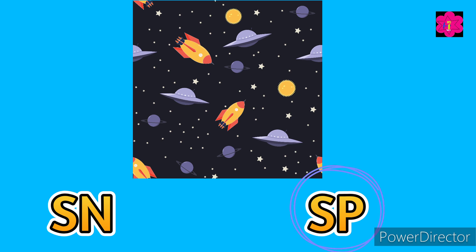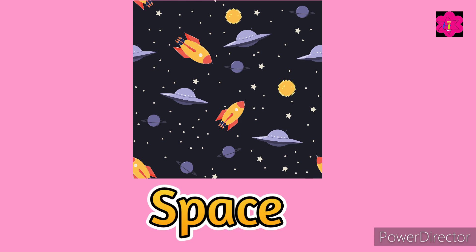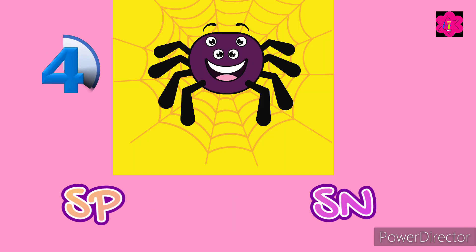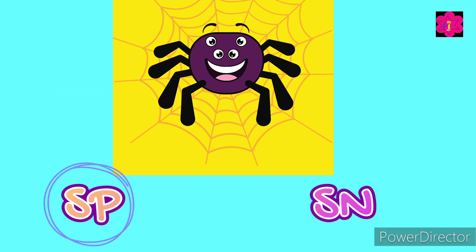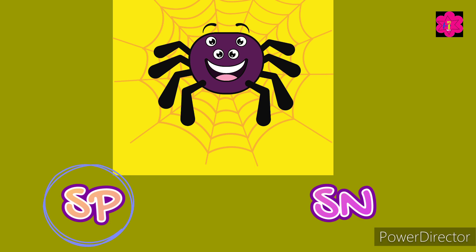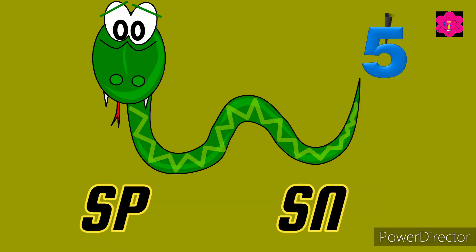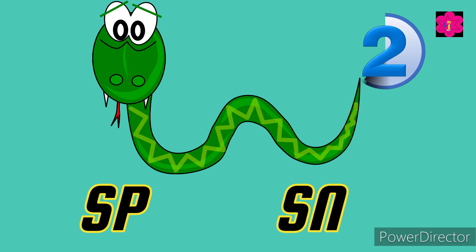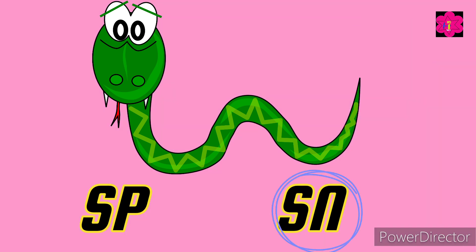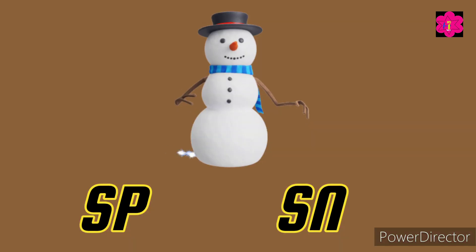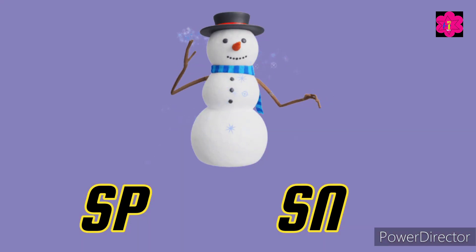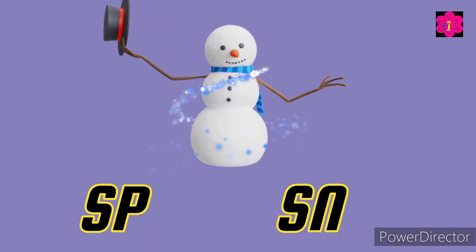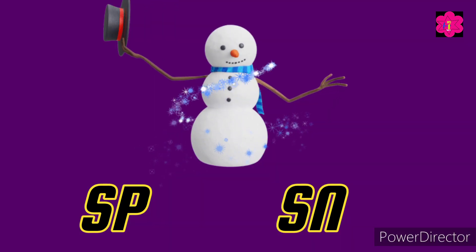SP — space. Correct! Spider. Snake. Yes, this is a snowman — so what's the initial blend?